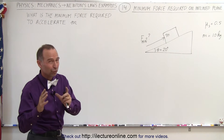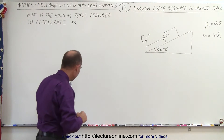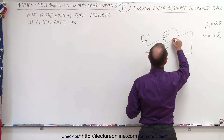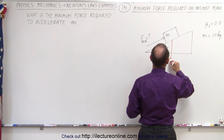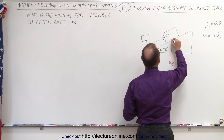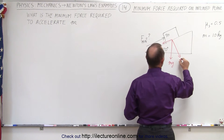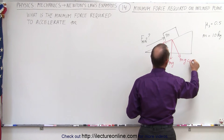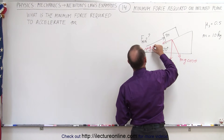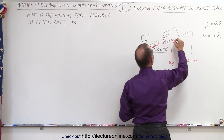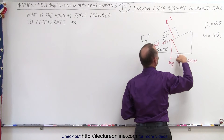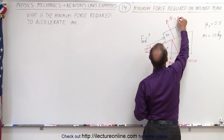Let's first draw the forces and see what we can do with this problem. We have the force due to gravity, which is mg, and since it's on an incline, we'll have the perpendicular component and the parallel component. The perpendicular component is mg times the cosine of theta. The parallel component is mg times the sine of theta. We then have the normal force pushing back, and the normal force equals mg cosine theta.